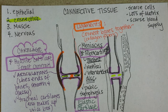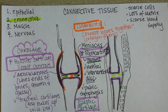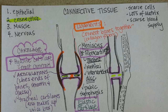We're picking back up again with connective tissue. First we went over the three different kinds of cartilage. Cartilage is interesting in that it has sort of triangular shaped cells, lots of different fibers, and lots of glycoproteins.